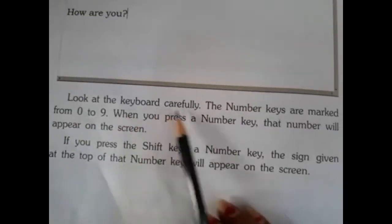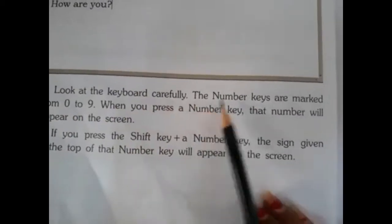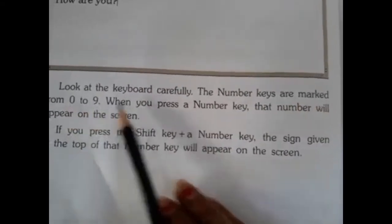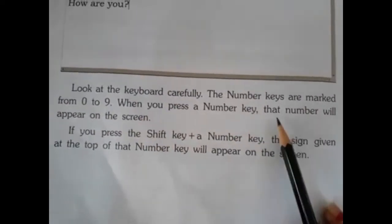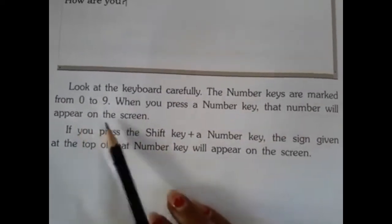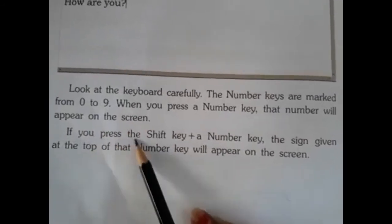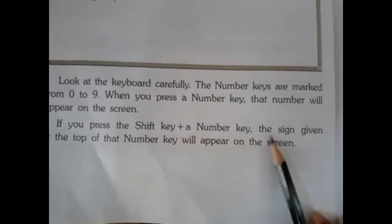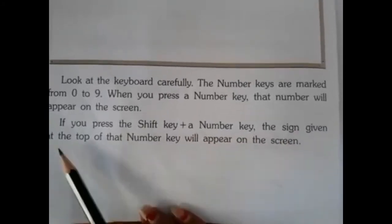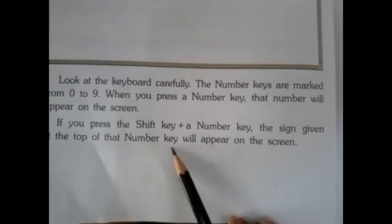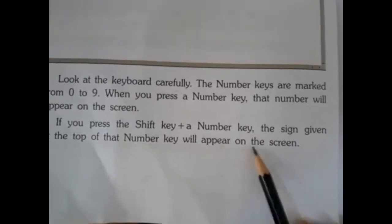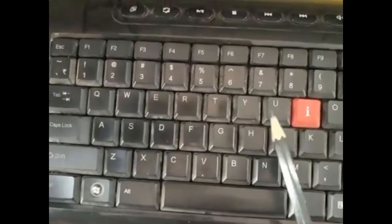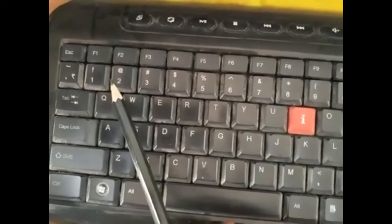Look at the keyboard carefully — the number keys are marked from 0 to 9. When you press a number key, that number will appear on the screen. If you press the Shift key plus a number key, the sign given at the top of that number key will appear on the screen.